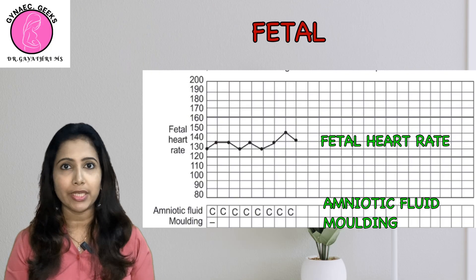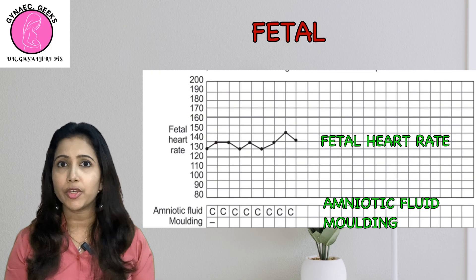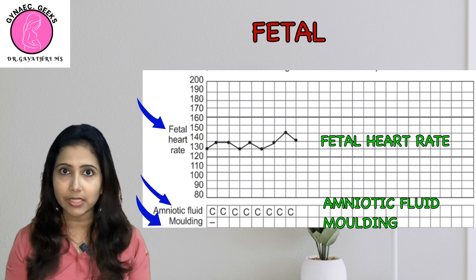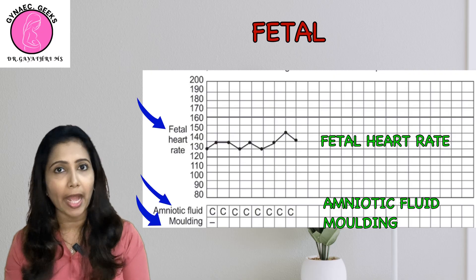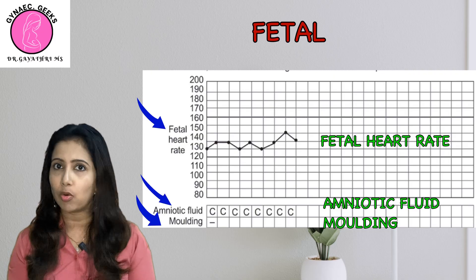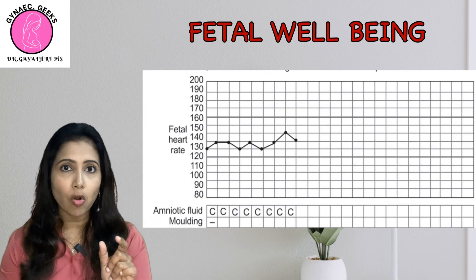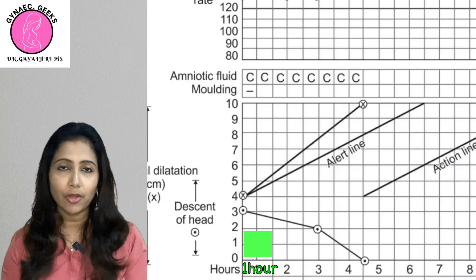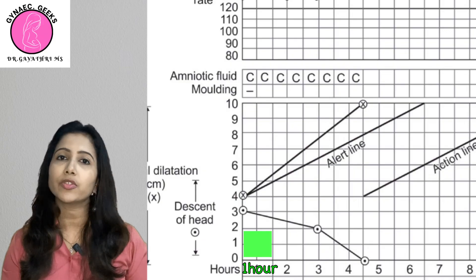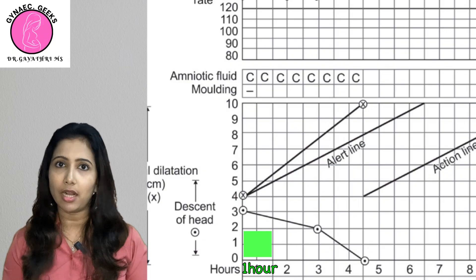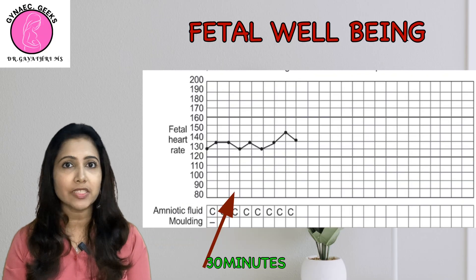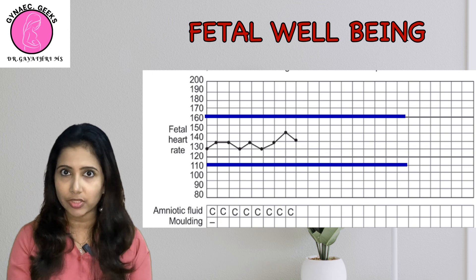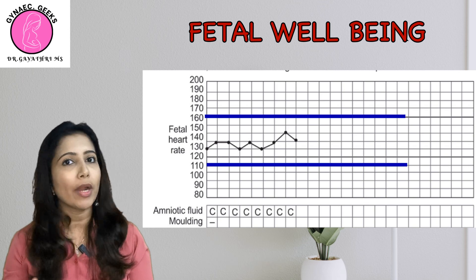Next is fetal well-being. This can be remembered through the mnemonic HAM — H-A-M. H is for fetal heart rate, A is for amniotic fluid, and M is for moulding. Note that the small box represents half an hour whereas the large box denotes one hour. The fetal heart rate is measured every 30 minutes and the normal fetal heart rate is between 110 to 160.